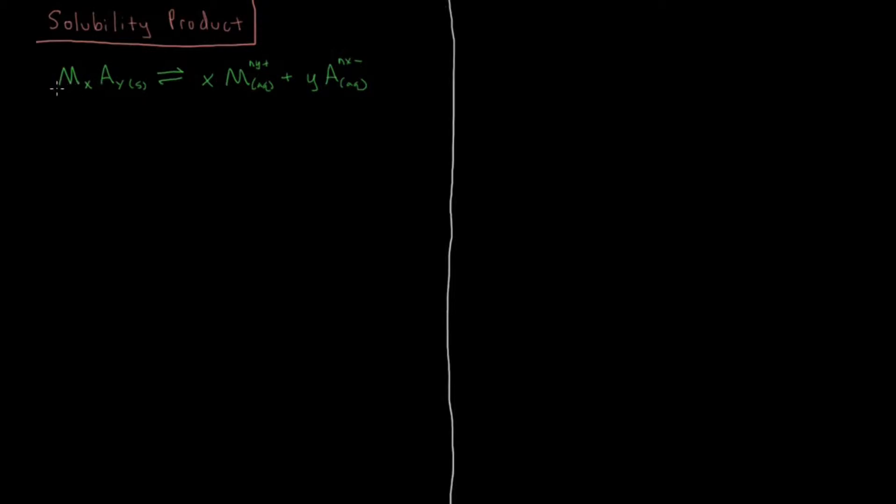So a solubility product looks kind of like this. We have some reaction where you have some salt where you have it sparingly soluble in aqueous solution. So there's an equilibrium which is favoring the solid salt but goes a little bit dissolved into solution. So if you have some stoichiometric coefficient on your metal and your anion which give you these values here, when it dissociates into solution you'd have x moles of the metal and you'd have y moles of the counter ion with their corresponding charges such that you get electric neutrality.